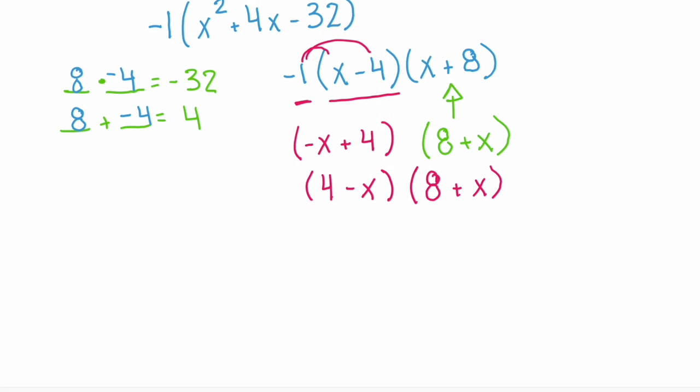And remember, we can check these. So let's just do a quick check using FOIL. So first is 4 times 8, outer is 4 times x, inner is negative x times 8, and last is negative x times x. So we have our 32, and then we have plus 4x minus 8x and minus x squared.